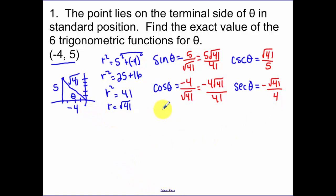Next, we have our tangent. The tangent is the opposite over the adjacent. So that's going to be negative 5 fourths. And its reciprocal, which is cotangent, is going to be the reciprocal of that, negative 4 fifths.